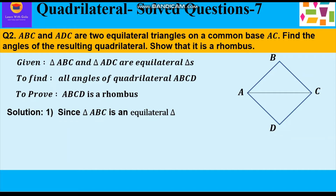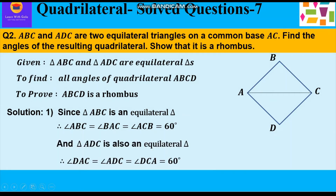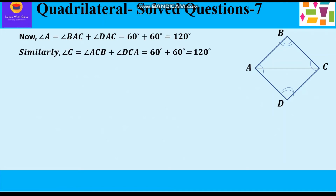Now let's start with the solution. Since triangle ABC is an equilateral triangle, all its angles are equal to 60 degrees. So angle ABC = angle BAC = angle ACB = 60 degrees. Now further, since triangle ADC is also an equilateral triangle, its angles are also 60 degrees. So angle DAC = angle ADC = angle DCA = 60 degrees. Now angle A comprises two angles, BAC and DAC, that is 60 + 60 = 120 degrees.